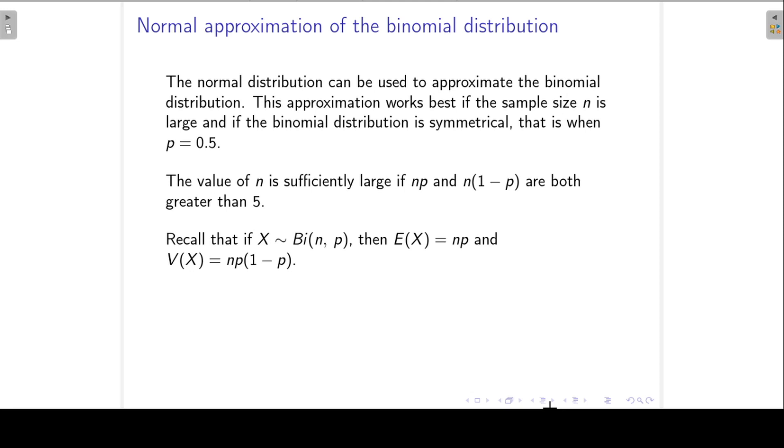The normal distribution can be used to approximate the binomial distribution. This approximation works best if the sample size n is large, and if the binomial distribution is symmetrical, that is when your success probability is close to 0.5.